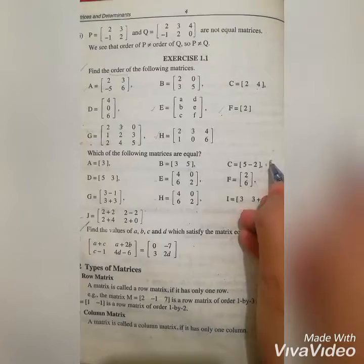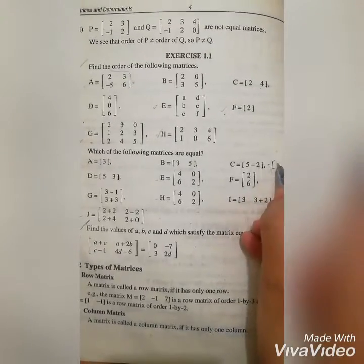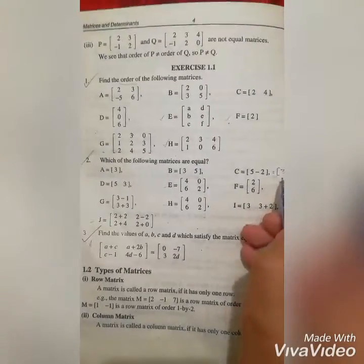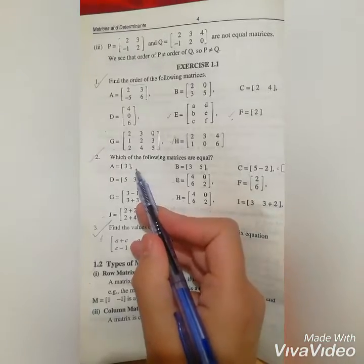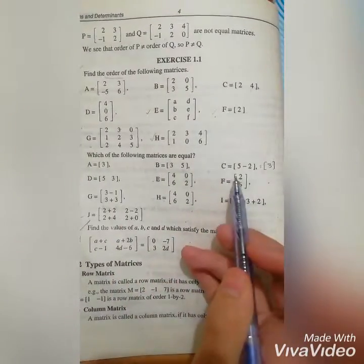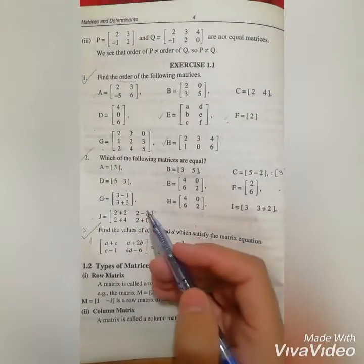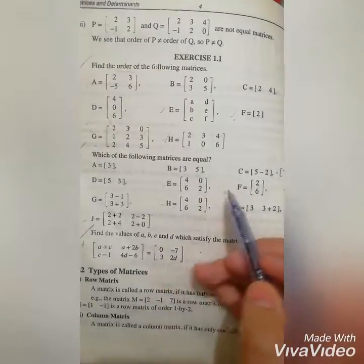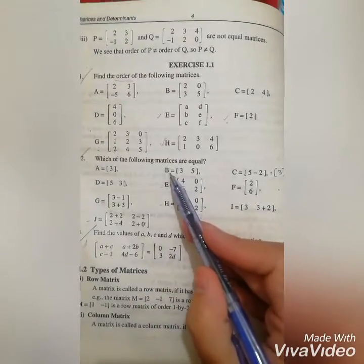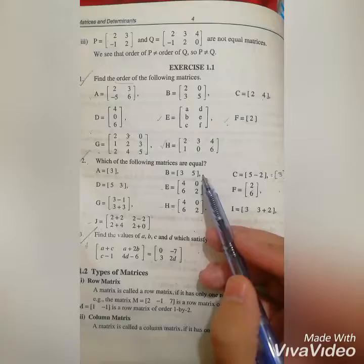When it is minus, we can simplify it. If we have 5 minus 2, we get 3. So does A match C? Yes. So A equals C.